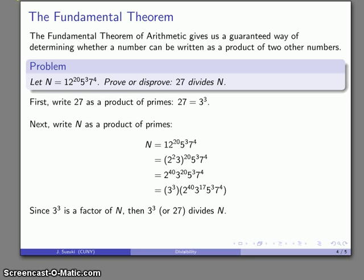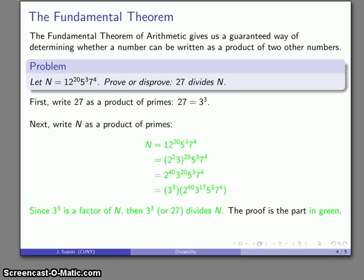By definition, 3 to the third—that's 27—divides N, and the proof that 27 divides N really is the portion in green.